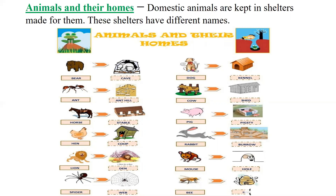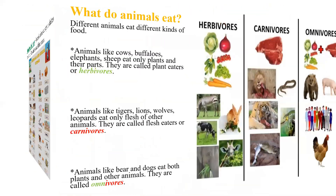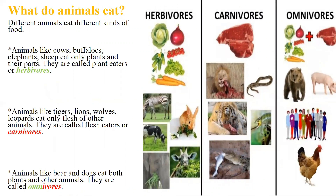Now let us understand what animals eat. Different animals eat different kinds of food. Animals like deer, goat, sheep, camel, buffalo, and cow eat only plants and their parts — they are called plant eaters or herbivores. Animals like tiger, wolf, leopard, and lion eat only the flesh of other animals — they are known as flesh eaters or carnivores.